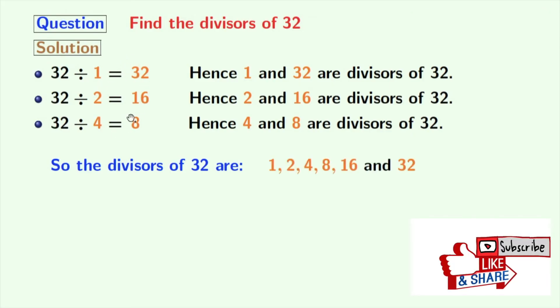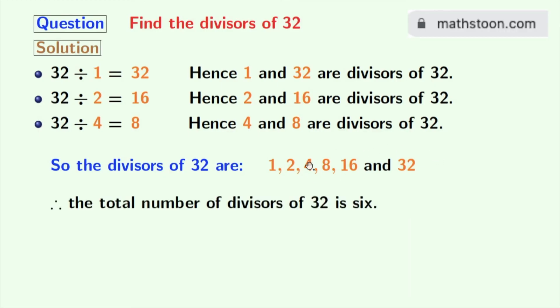These numbers are 1, 2, 4, 8, 16 and 32. So, the total number of divisors of 32 is 6.